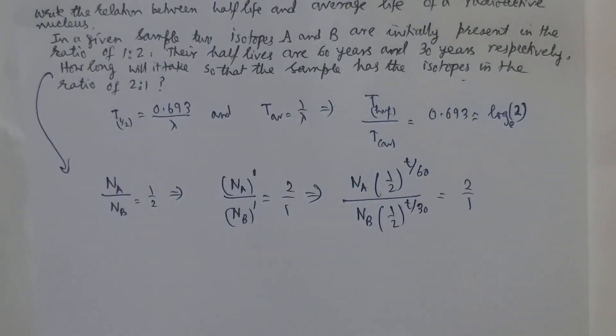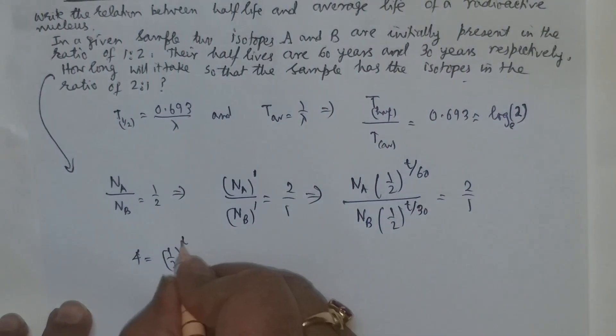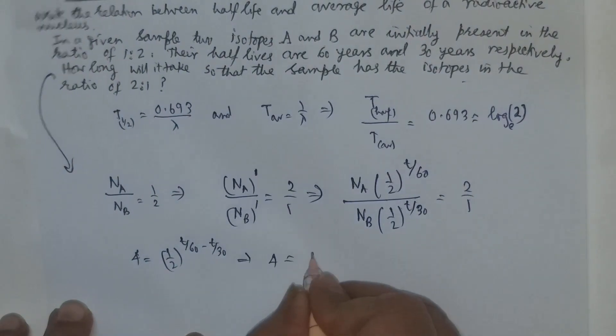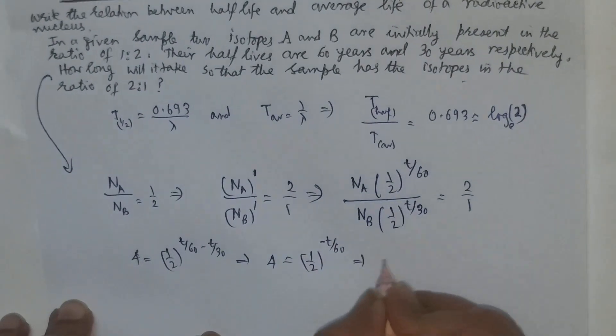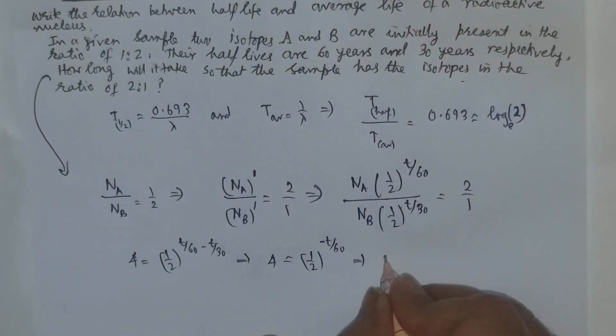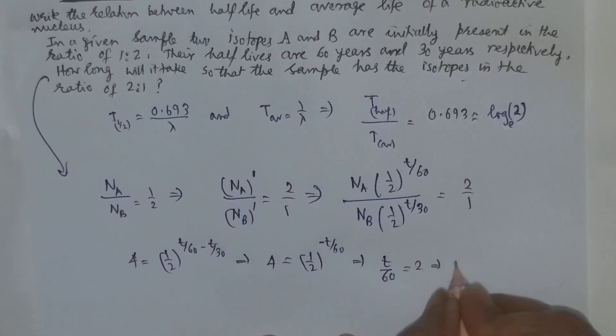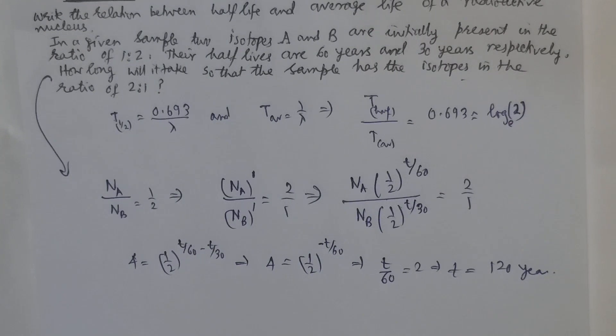After cross multiplying we get 4 is equal to half to the power t by 60 minus t by 30. So 4 is equal to half to the power minus t by 60. We can have 2 square, make it positive and take the ratio. We have t by 60 equals 2, so t is equal to 120 years. After this much time the sample ratio will become 2 by 1.